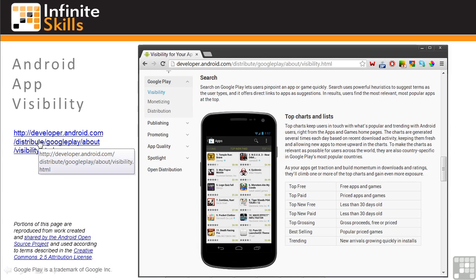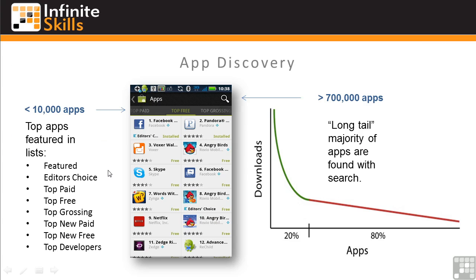On this page there's also a discussion of their top charts and lists, and there's a link to this page on the left. If you can get your app into one of the top lists, it's a big leg up on the competition. However, by my calculation, the top lists cover maybe 10,000 apps — a small percentage of the 700,000 or so apps currently on Google Play. Most apps are discovered through search, and following the 80-20 rule, at most 20% of apps get most of the attention.